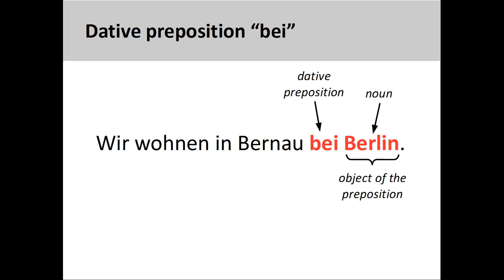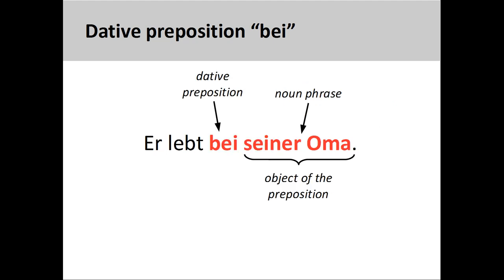The preposition bei can be used to express being in the vicinity of something or near to it. You will see this frequently in place names: Wir wohnen in Bernau bei Berlin — we live in Bernau near Berlin. The preposition is also used to express being at a person's place of residence or living with this person. For example, er lebt bei seiner Oma — he is living with his grandmother.